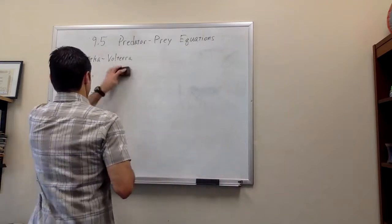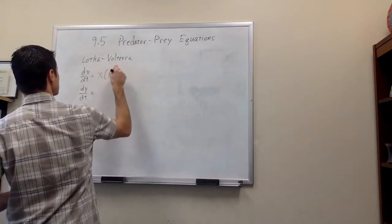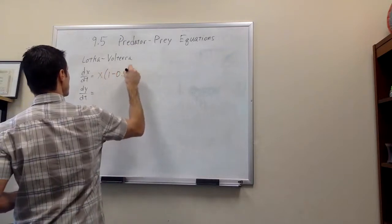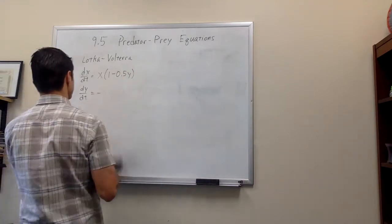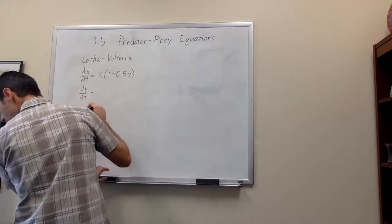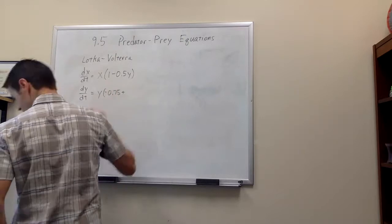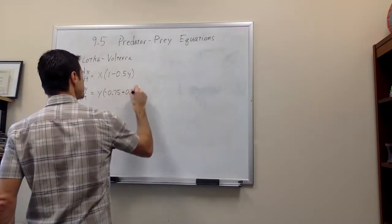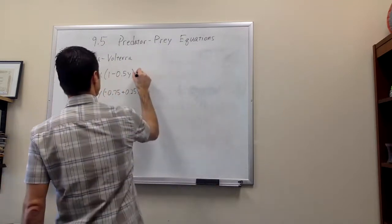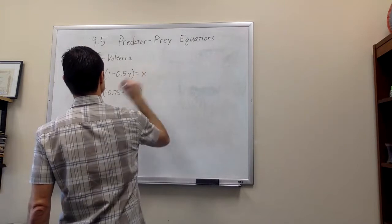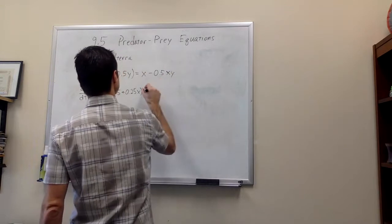So the example we'll look at is dx dt equals x times 1 minus 0.5y, and dy dt equals y times negative 0.75 plus 0.25x. This is with x and y factored out of these equations.